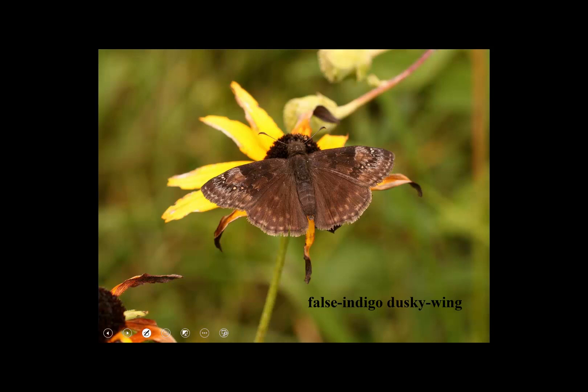Caterpillars don't feed willy-nilly on any old plant, and females don't lay their eggs willy-nilly on any old plant — only particular plants they're adapted to eat. This butterfly's larvae feed on false indigo.